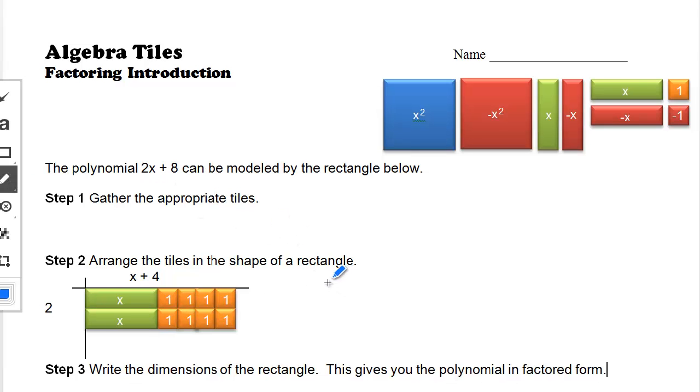To check your work, just take the 2 times the x plus 4. Distributive property gets us 2x plus 8, our original expression.